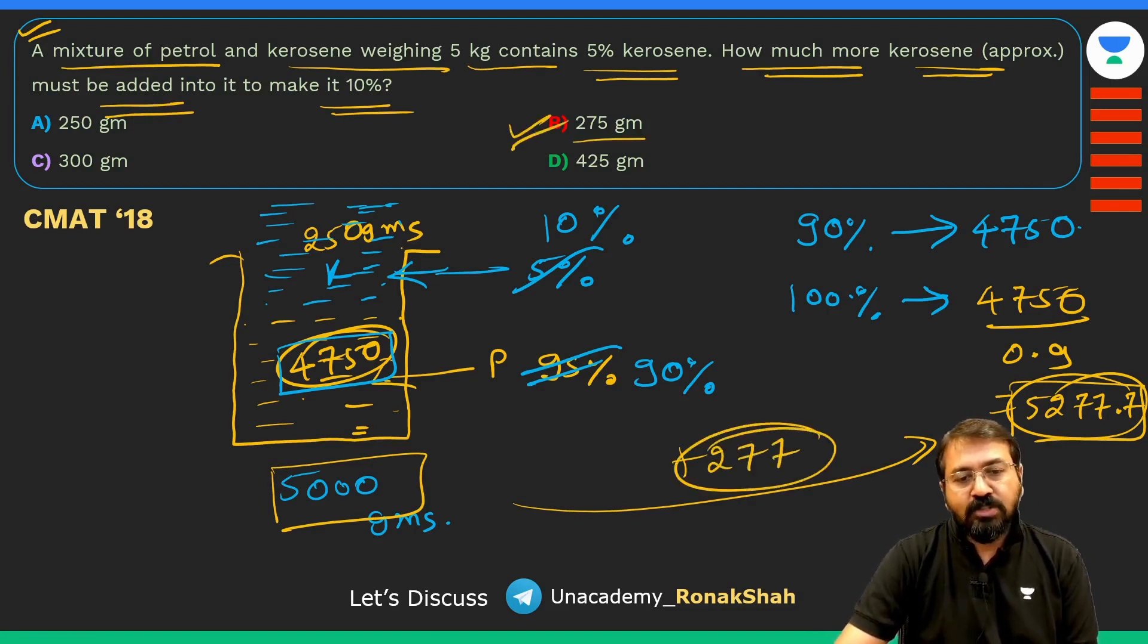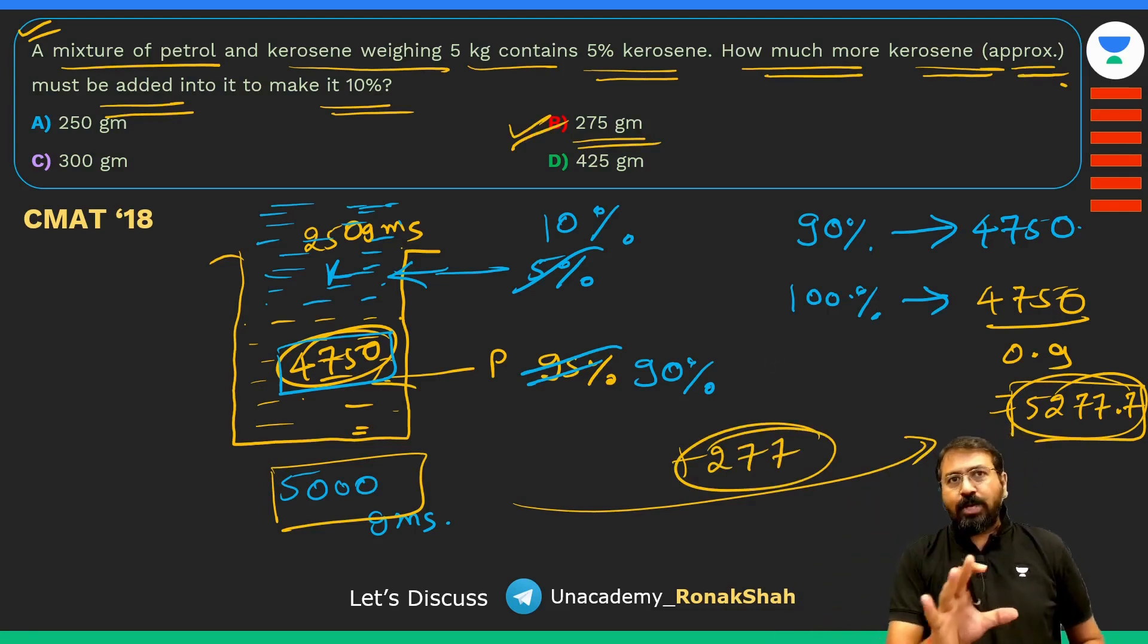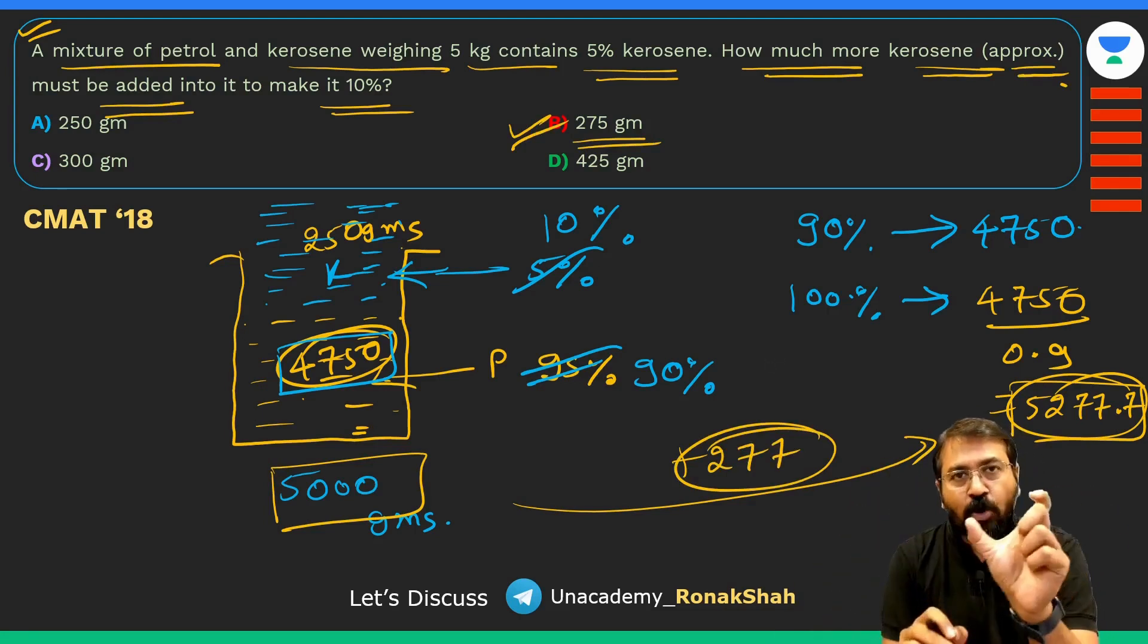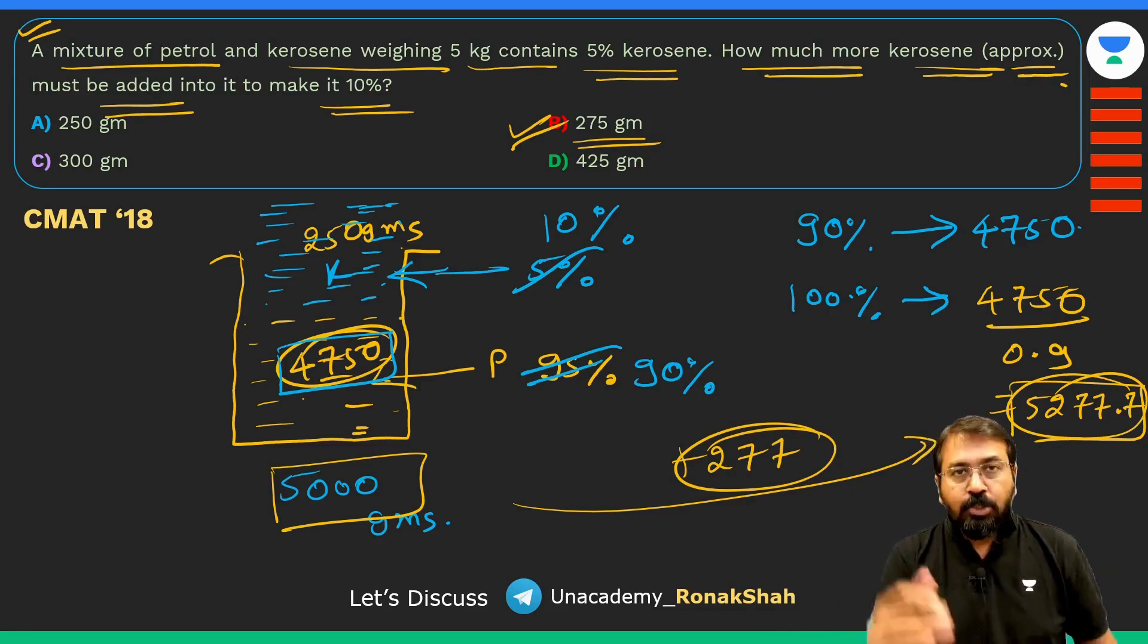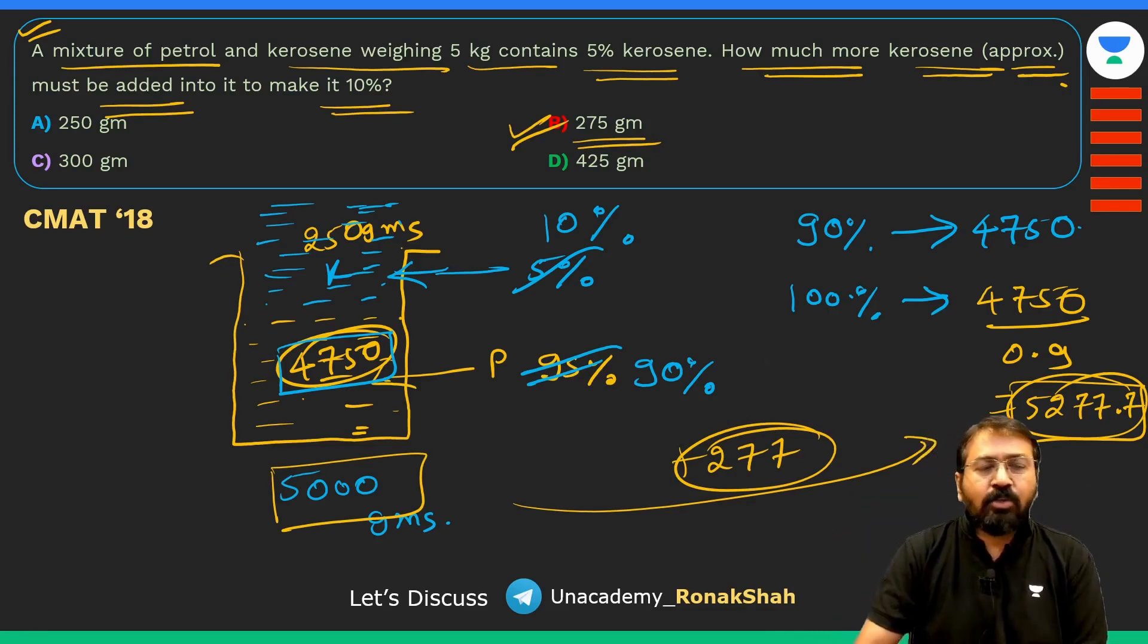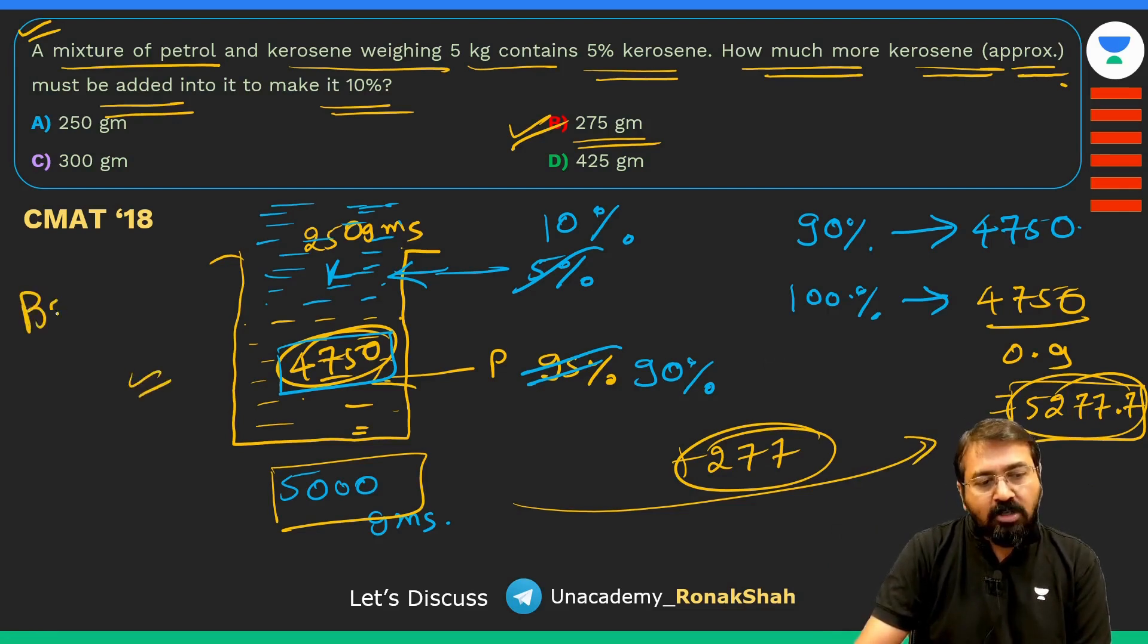Earlier weight was 5000 grams and now it has become 5277 grams, so we have added 277 grams approximately. So here the option is 275 grams because we had to find out approximate value.